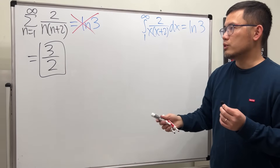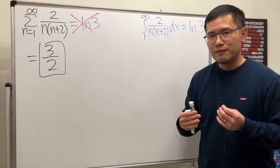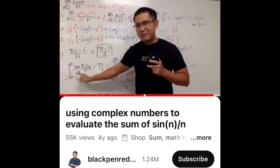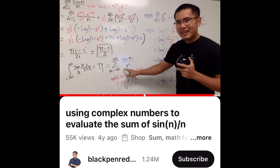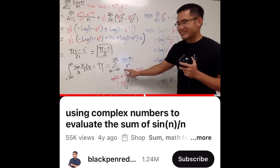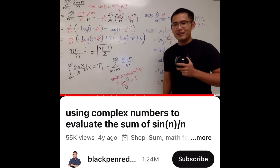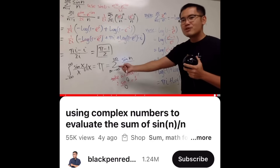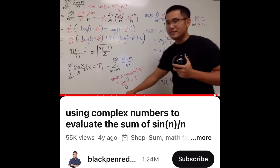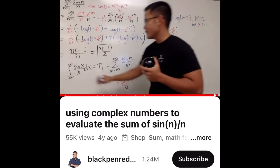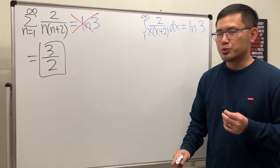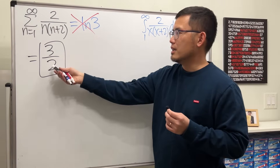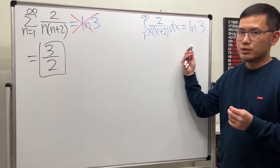They will not converge to the same value, except for some very famous cases where the improper integral is the same as the infinite series — both magically equal to pi. Just amazing. But in this case, they are not equal: the series is 3 over 2 and the integral is ln3. You can check out an example in the description.